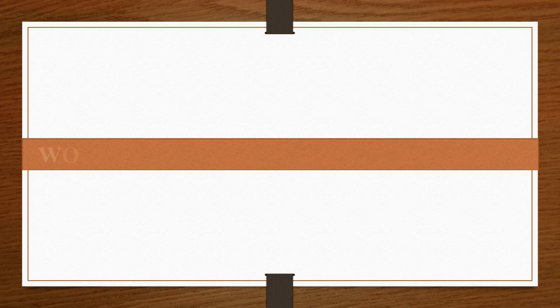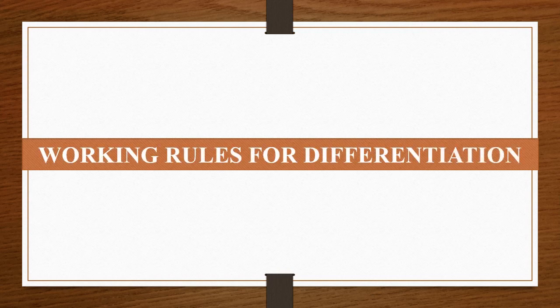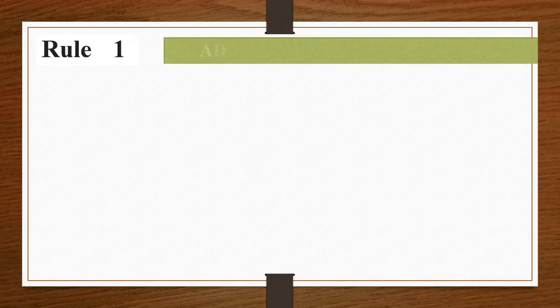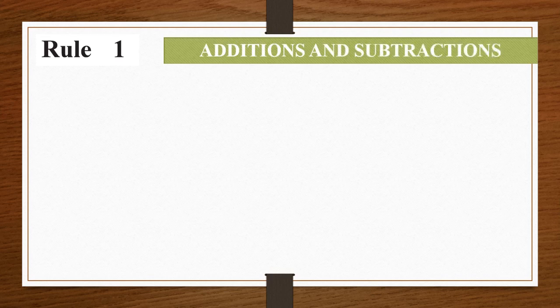Now, some of the standard working rules for calculating differentiation we are going to study. There are four working rules for differentiation and among them the first two we are going to study in today's video. Rule number one: additions and subtractions. When in our question the functions are getting added or subtracted,